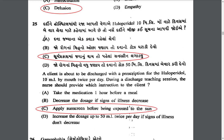A client is about to be discharged with a prescription for haloperidol 10 mg by mouth twice per day. During the discharge teaching session, the nurse should provide which instruction? Never increase or decrease the dosage of antipsychotic drugs on your own. Options B and D are incorrect. Haloperidol is photosensitive, so the correct answer is C — apply sunscreen lotion before being exposed to the sun.